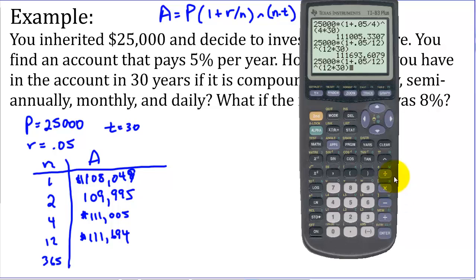And 365 daily. So we've got a change here. So our last calculation, I want to change that 12 to 365. So we've got 365 raised to the number of days in 30 years, 365 times 30, and 112,030.